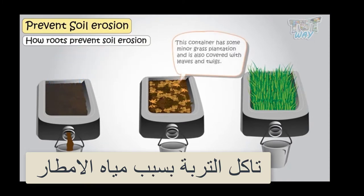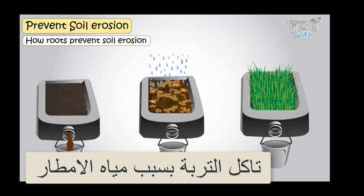Now this container has some minor grass plantation and is also covered with leaves and twigs. When water flows from above this soil, less soil is washed away.